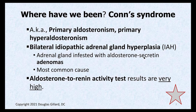We've been talking about Conn's syndrome, also known as hyperaldosteronism or primary aldosteronism. The most common cause is a condition where the adrenal gland becomes overgrown with adenomas, which are tumors. Specifically, these tumors are made of glomerulosa cells — the ones that secrete aldosterone. The adrenal glands get quite large and lumpy. This is called bilateral idiopathic adrenal gland hyperplasia because it usually occurs bilaterally.